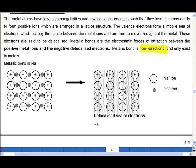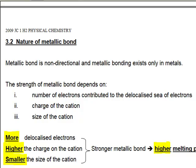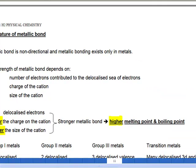So let's look at the strength of a metallic bond. The strength of a metallic bond depends on three factors. First is the number of electrons contributed to the delocalized sea of electrons, and the charge and size of cations. More delocalized electrons, higher charge and smaller size cations will have stronger metallic bond which will result in higher melting and boiling points.